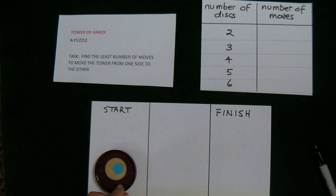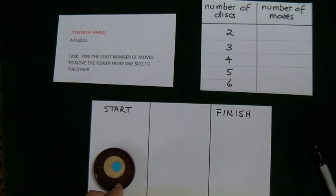I've made a tower in order of size with the smallest on the top and I've put the tower in the starting space. The challenge is to move the tower to the finishing space in the fewest number of moves possible. The rules are move only one disc at a time and never put a larger disc on a smaller one.